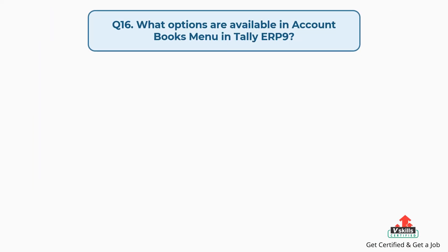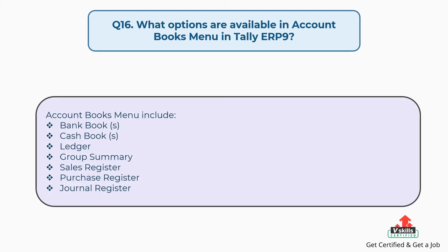Question number sixteen: what options are available in the account books menu in Tally ERP9? The account books menu includes bank books, cash books, ledger, group summary, sales register, purchase register, and journal register.